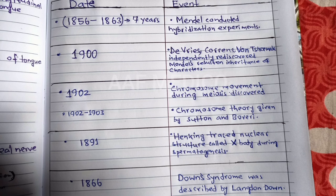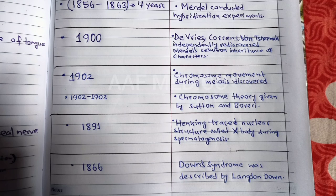The next date was 1900. In the year, Hugo de Vries, Korens, and Von Cermak independently rediscovered Mendel's results on inheritance of characters. So who rediscovered Mendel's experiment? Von Cermak, Korens, and Hugo de Vries.